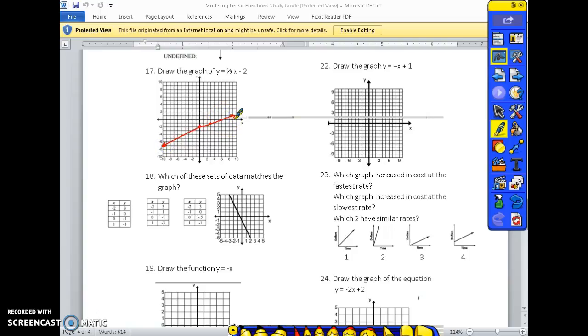Number 18, which of these sets of data matches the graph? Well, we start at negative 1 for our y-intercept, so when x is 0, y is negative 1, it can't be that one.